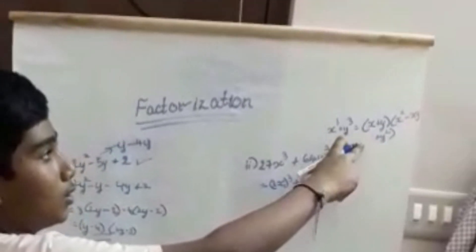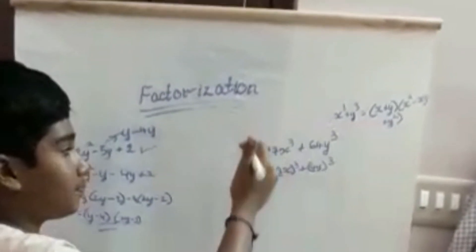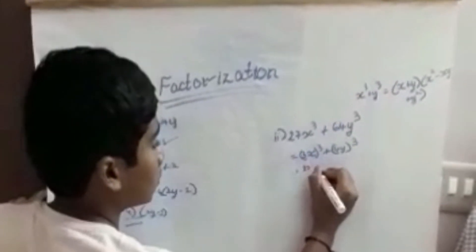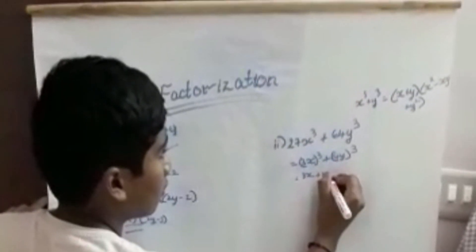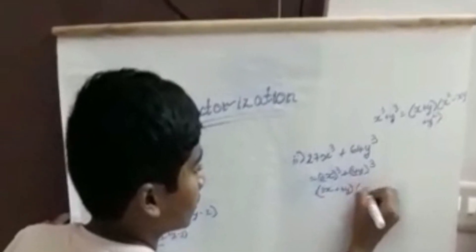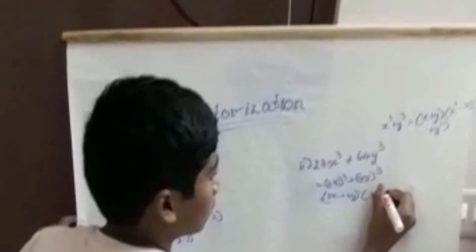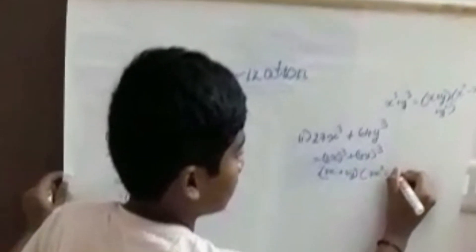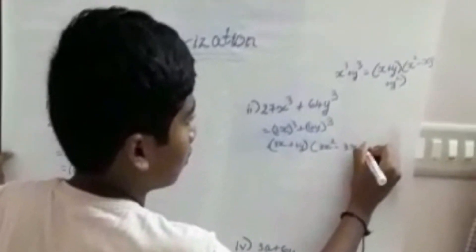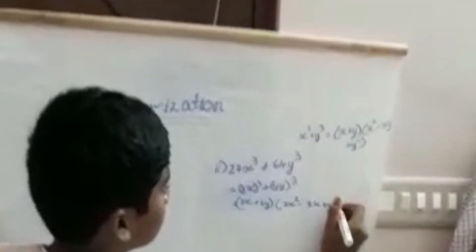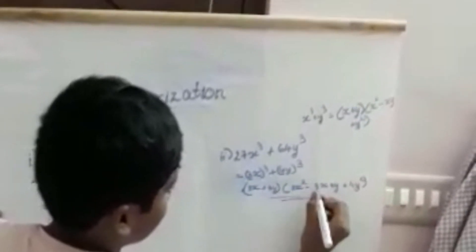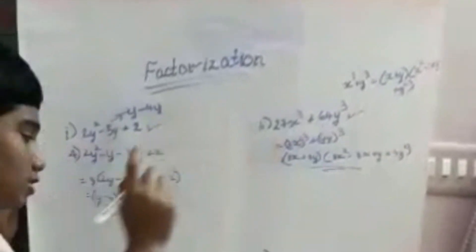I apply this formula. You can see here, right? (3x + 4y)(3x² - 3x·4y + 4y²). Here is the factorized form of this equation.